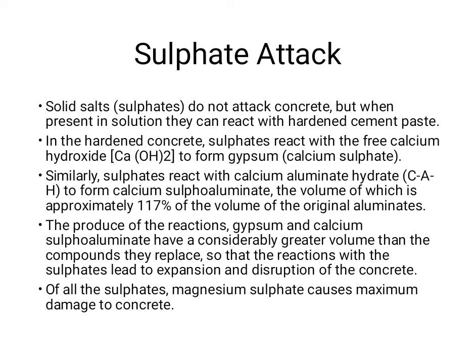Calcium aluminate hydrate (CAH) present in cement paste also reacts with calcium sulfate. CAH reacts with calcium sulfate to form calcium sulfoaluminate hydrate (ettringite) and gypsum. This is the second reaction in sulfate attack — CAH combined with gypsum produces ettringite and calcium sulfate hydrate.